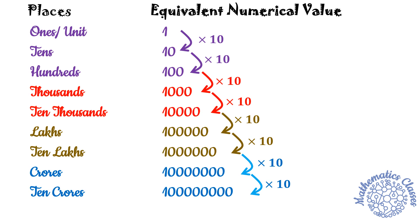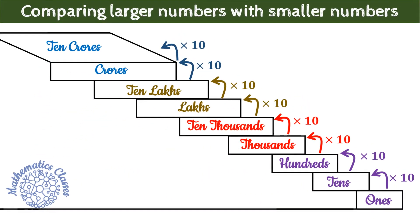हम इन्हें smaller numbers से compare करके भी देख सकते हैं, कि ये numbers उनके comparison में कितने बड़े हैं। To do that, हम इन place value chart को एक staircase पर लिख सकते हैं। यहाँ हर step पर हम places को mention कर सकते हैं, और हर एक step के साथ हमारी value 10 times बढ़ जाती है। Like 10,000s is 10 times of 1000s and Lakhs is 10 times of 10,000s.